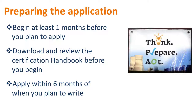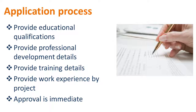Begin at least one month before you plan to apply. Download and review the certification handbook before you begin. Apply within six months of when you plan to write. The CBAP application process requires you to provide all details about education, work experience, training, and reference requirements. Provide educational qualifications, professional development details, reference details, and work experience details by project. CBAP approval is now immediate.